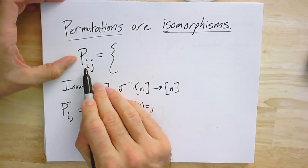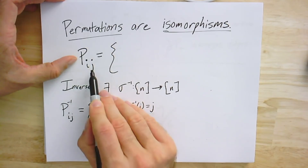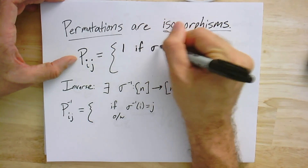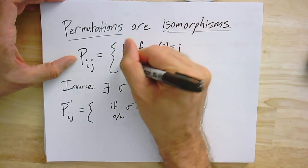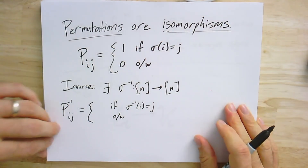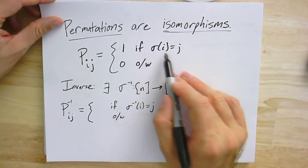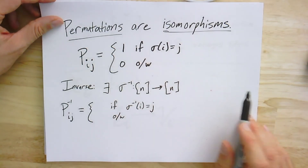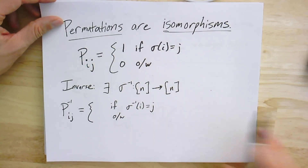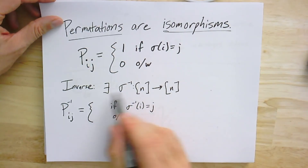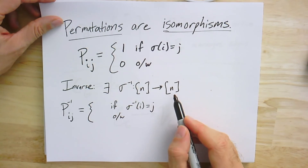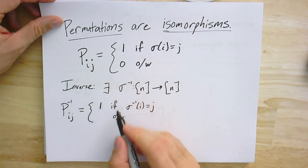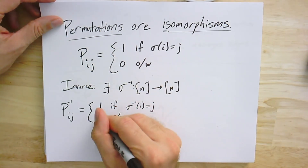It's important to point out that these permutations are isomorphisms. The matrix for a given permutation has element 1 if σ(i) equals j and 0 otherwise. You can check that if the permutation maps everything to itself, this gives the identity matrix. The permutation σ has an inverse — also a permutation — and you can write the matrix for the inverse as: 1 if σ⁻¹(i) equals j and 0 otherwise.